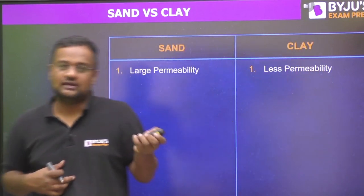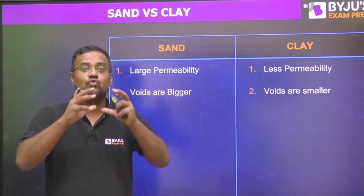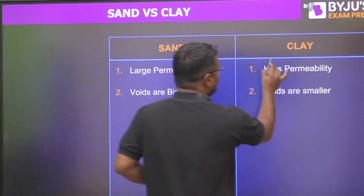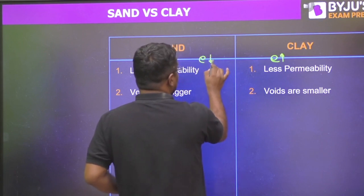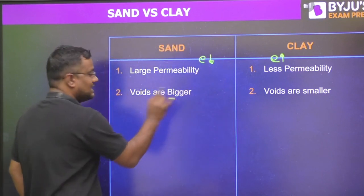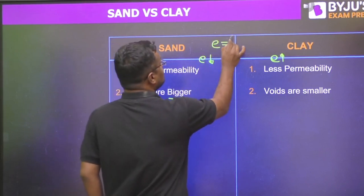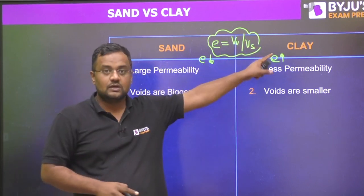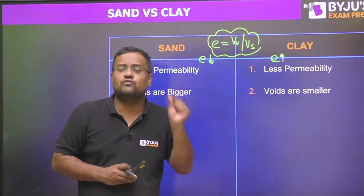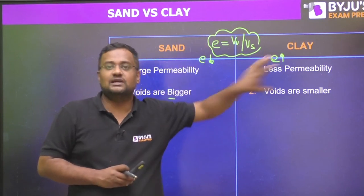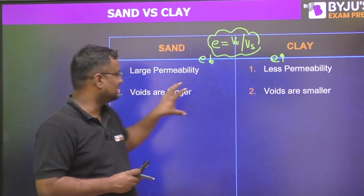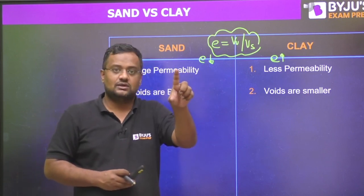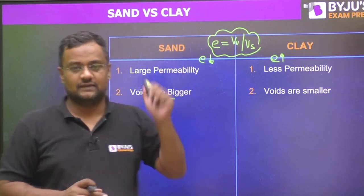Welcome from the studio. Sand has large permeability compared to clay because voids are big in sand, so water can travel faster. But void ratio is more in clays and less in sand. Void ratio is volume of voids divided by volume of solids. For a particular volume of solid, the volume of voids is more in clay because the voids are smaller but so numerous that the overall volume becomes bigger. One individual void is smaller in clay, which is why permeability is more in sand.